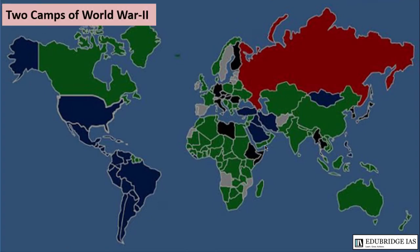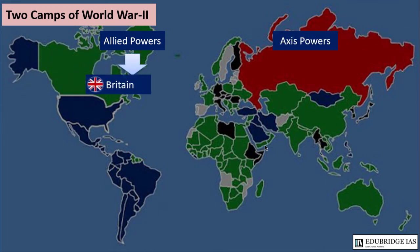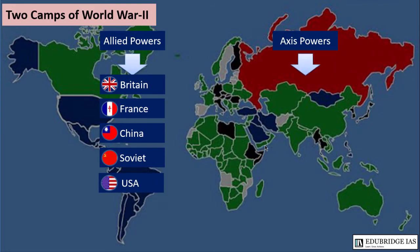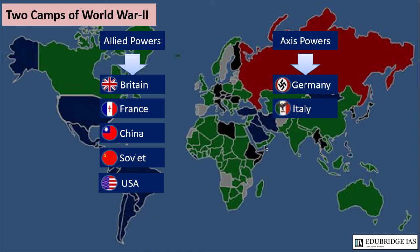World War II had two camps. The first was the Allied powers, which included Britain, France, China, Soviet Union, and the US. The second was the Axis powers, which included Germany, Italy, and Japan.